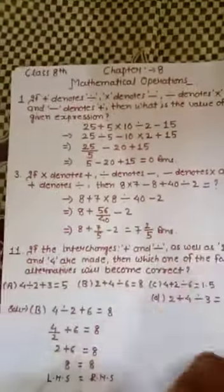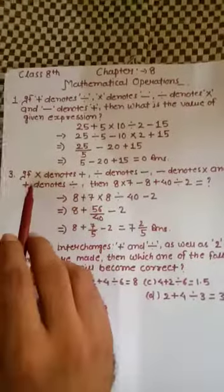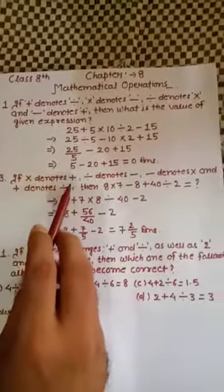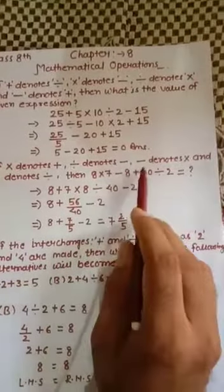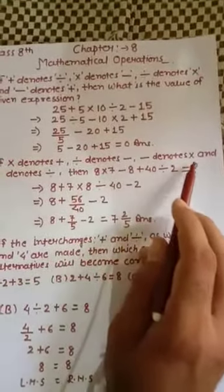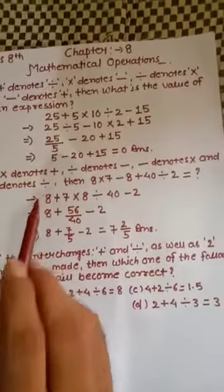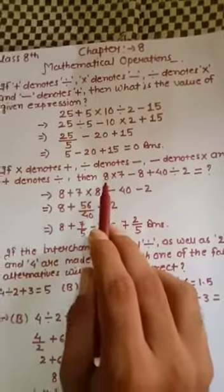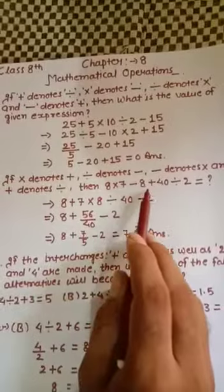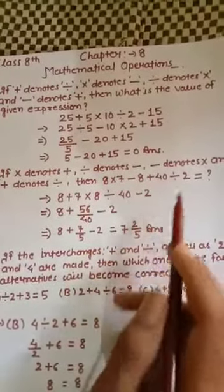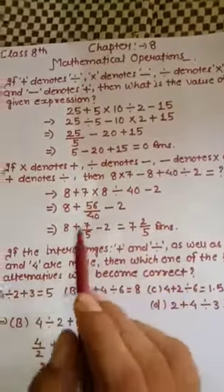Now come to the next question. In this question it says that multiply denotes plus, divide denotes minus, minus denotes multiply, and plus denotes divide. The expression given is: 8 multiply by 7 minus 8 plus 40 divided by 2. First, replace the given symbols with the information.